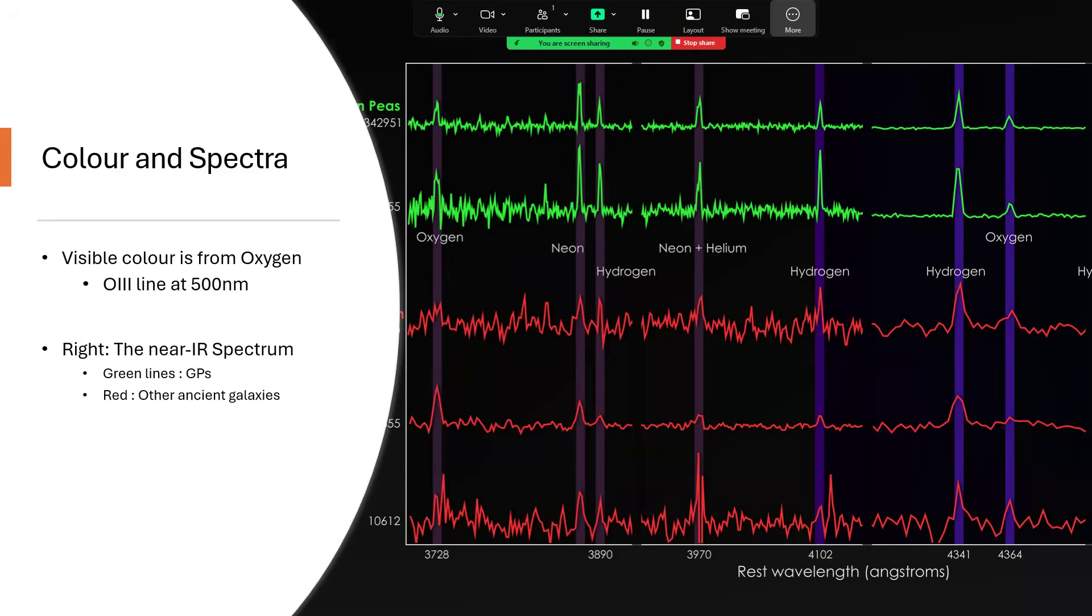Now the spectrum of them is fascinating. The spectrum on the right—the two green lines are GPs, Green Peas, and then we've got some other red galaxies for comparison—but that's the infrared, near-infrared part of the spectrum. The green color itself comes from a lot of oxygen that is ionized, atomic oxygen, doubly ionized oxygen, emitting at the 500 nanometer waveband in the visible part of the spectrum, so not the spectrum that we're looking at here.